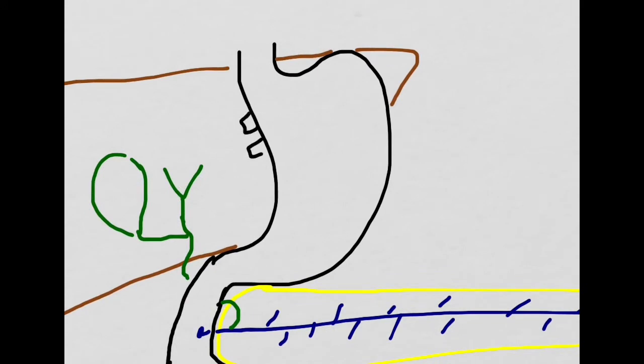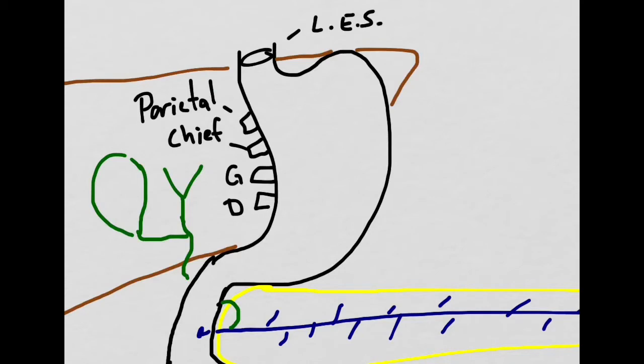There are four cells that we'll be talking about in the stomach that are found in the gastric pits. The first one is the parietal cell, the next one is the chief cell, then the G cell, and then finally the D cell. It should be noted that the lower esophageal sphincter is located between the esophagus and the stomach. At the lower end of the stomach, we will find the pyloric sphincter.